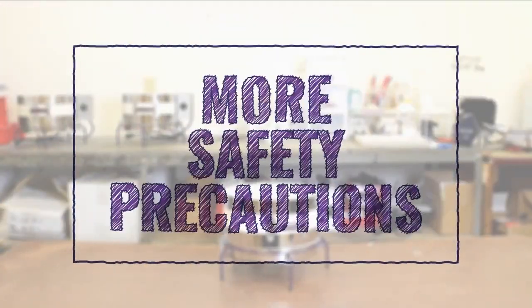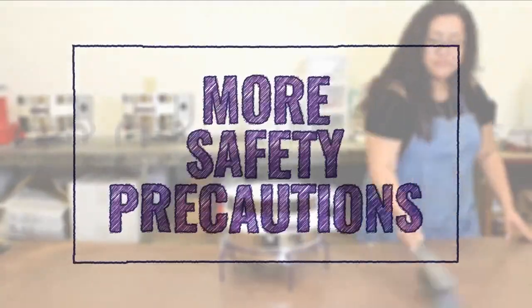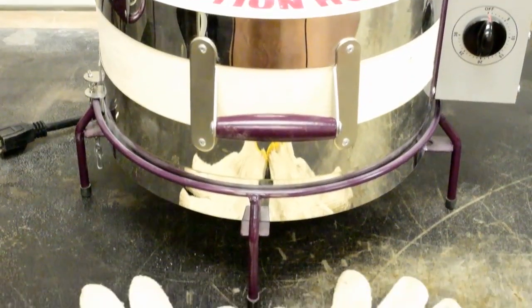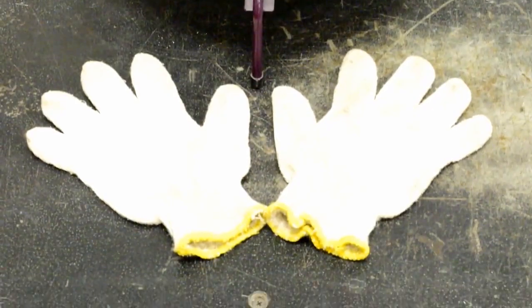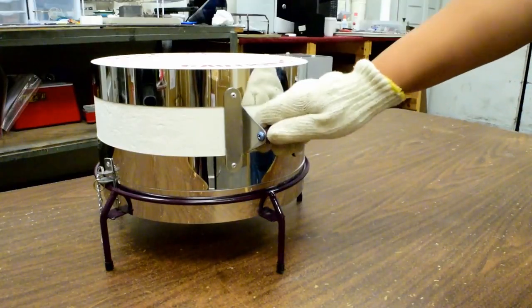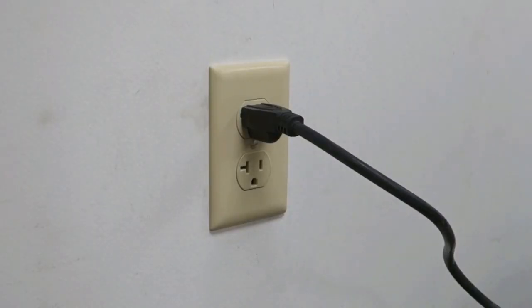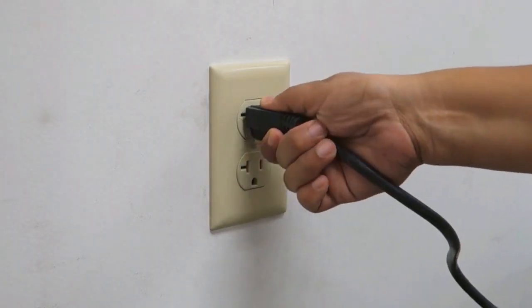While we wait for our pre-fire to finish, let's go over some more safety precautions. Always use safety mitts or heat-resistant gloves when handling the hot kiln. Make it a habit to always unplug your kiln while it's not in use.